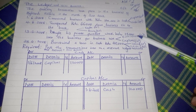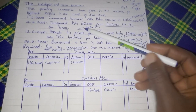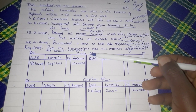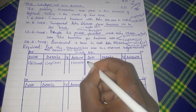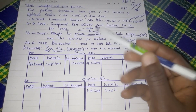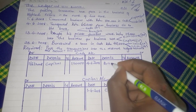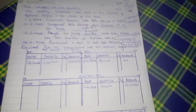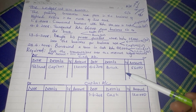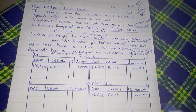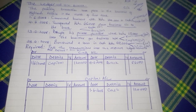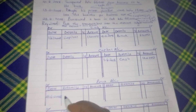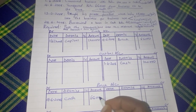For the second transaction on 4th June 2008, we already have an existing cash account, so there is no need to open another one. We credit the cash account $66,000, with the detail showing bank as the destination. Then we open the bank account and debit it on 4-6-2008, with the detail showing cash as the source, amounting to $66,000.